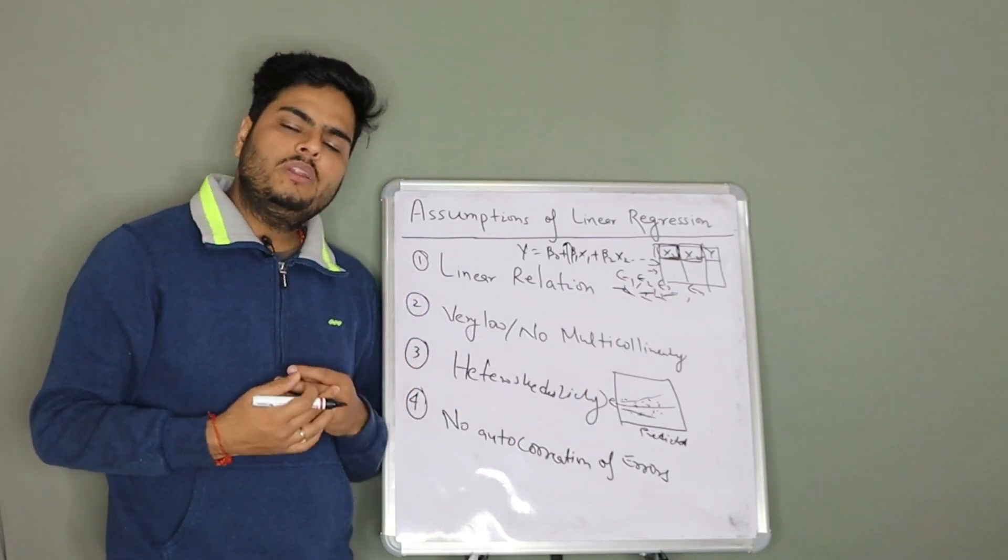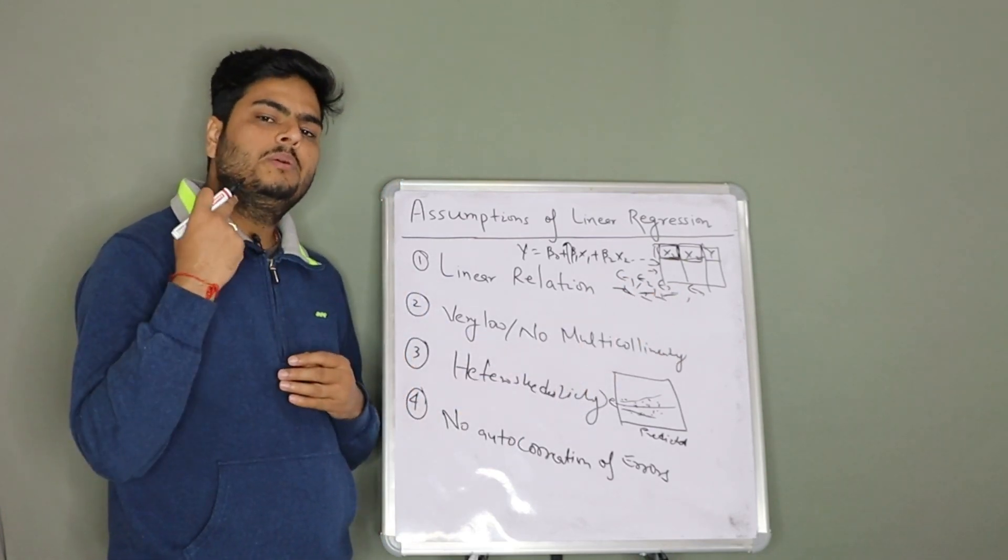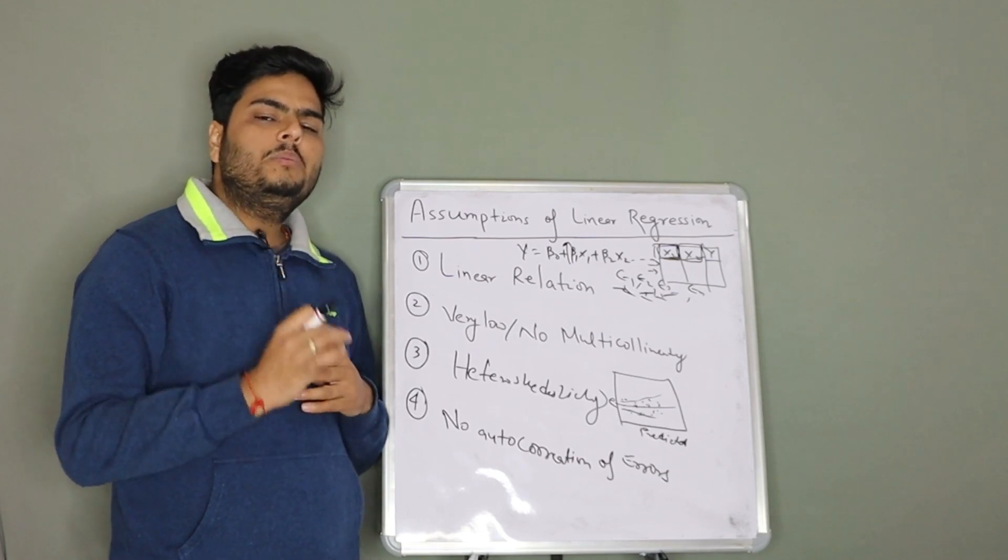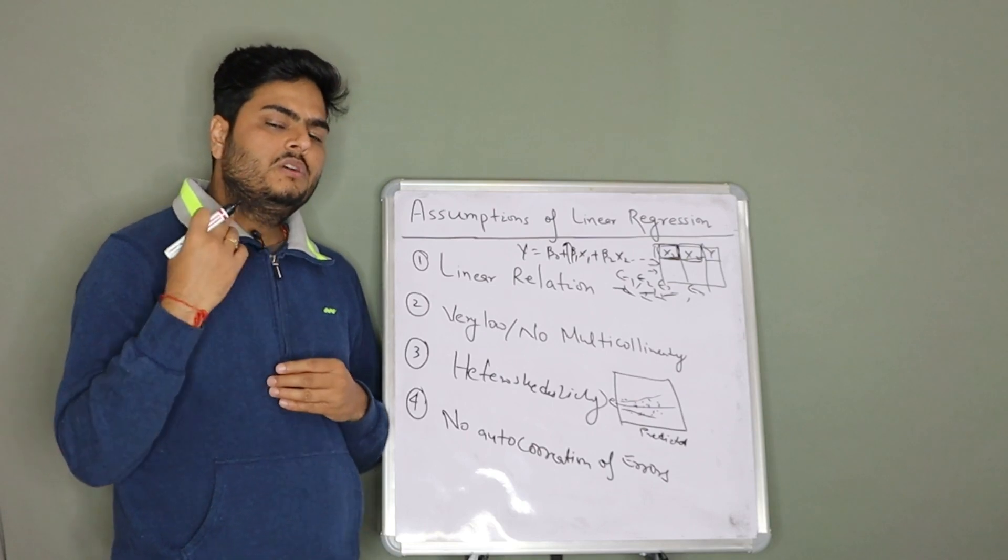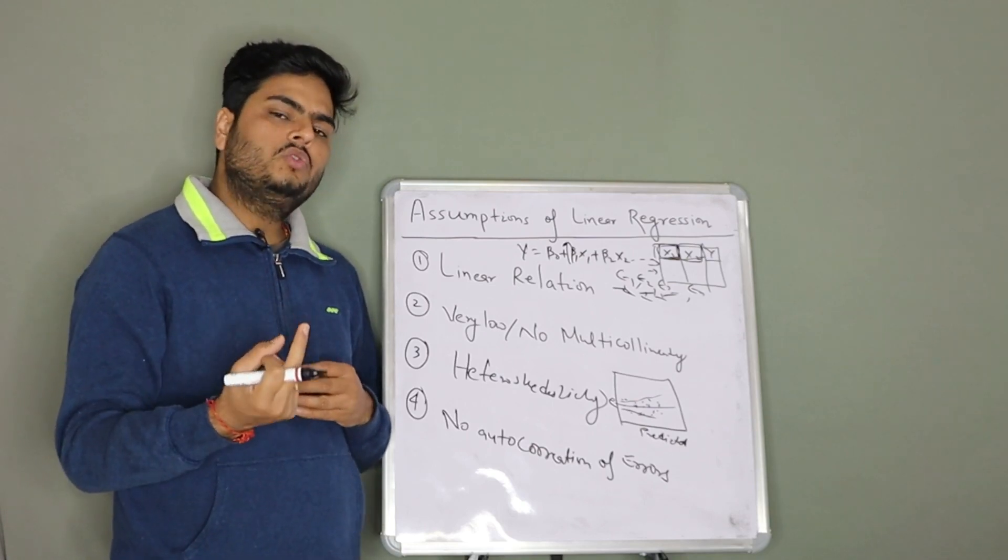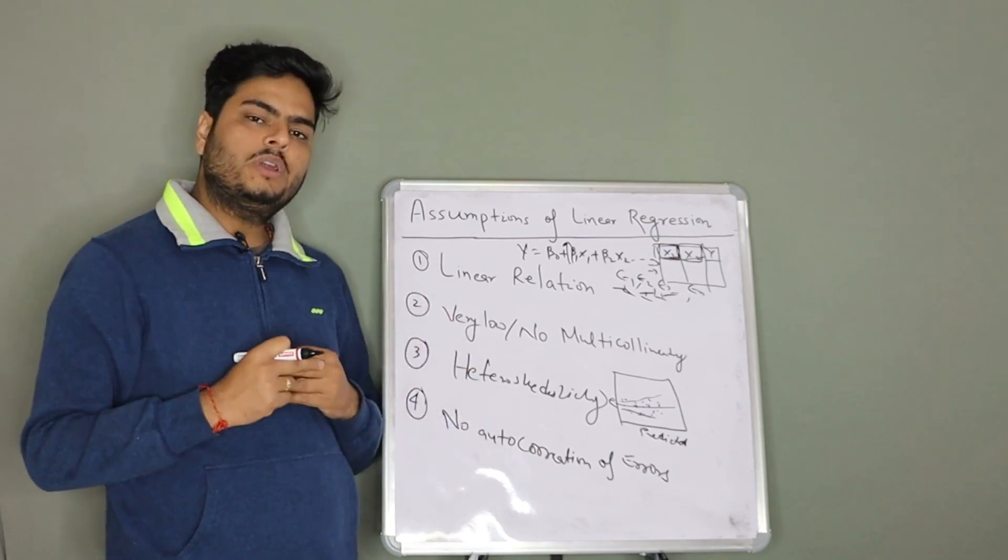Why should that happen? The reason is if your errors are able to explain each other, that means your regression model is not capturing the underlying pattern of the data. So if you have fit a regression model, you should also check for this.